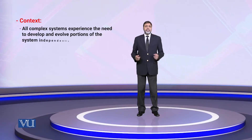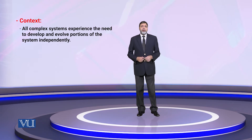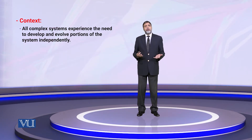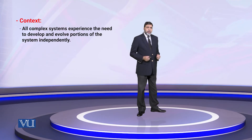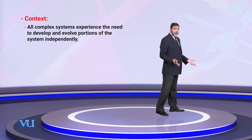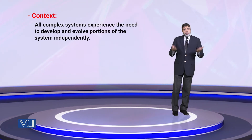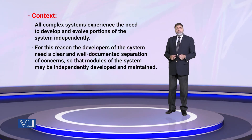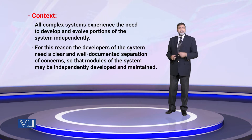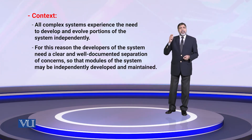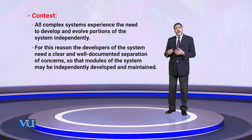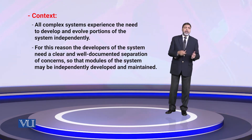When we have complex systems, all complex systems experience the need to develop and evolve portions of the systems independently. We want to say that the portions of the system independently develop and evolve. This is a very important fundamental thing. Interdependencies come to arise. And for that, the developers of the system need a clear and well-documented separation of concerns, so that the modules of the system may be independently developed and maintained.